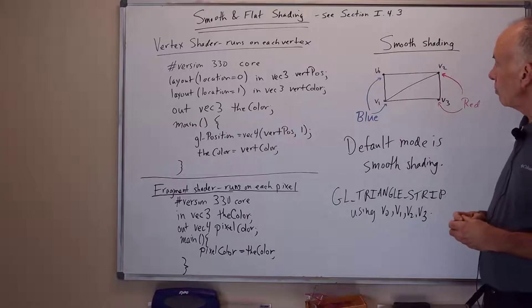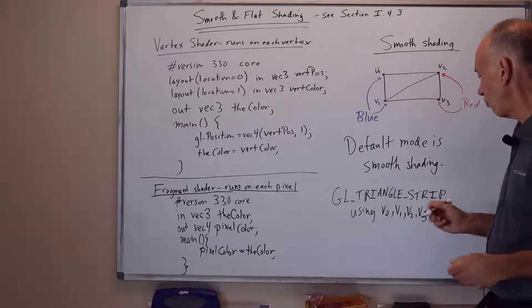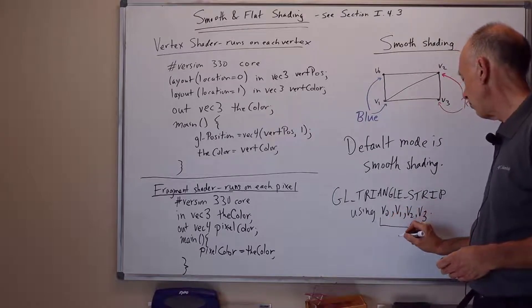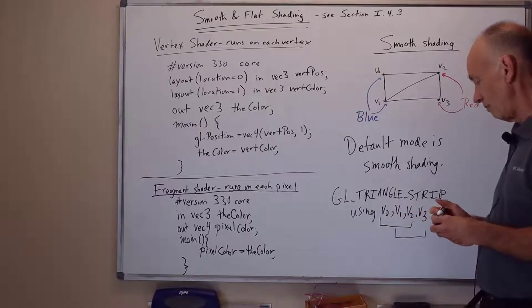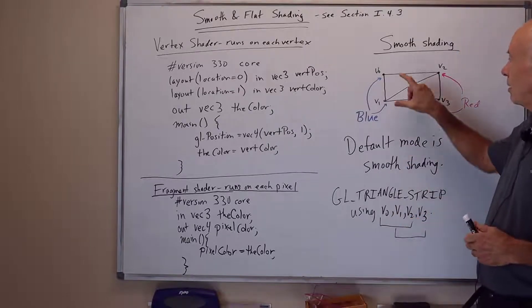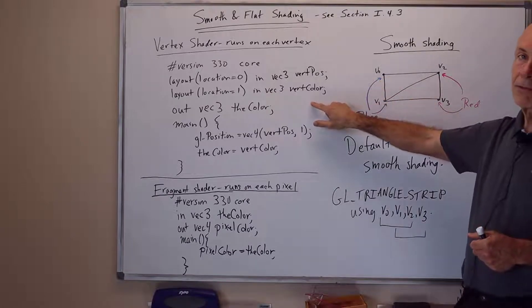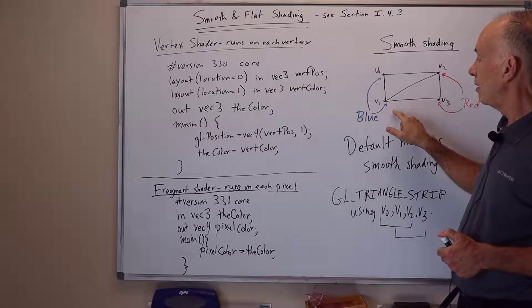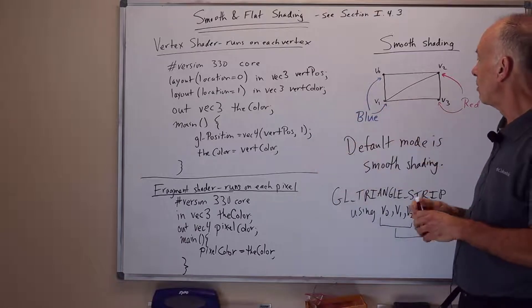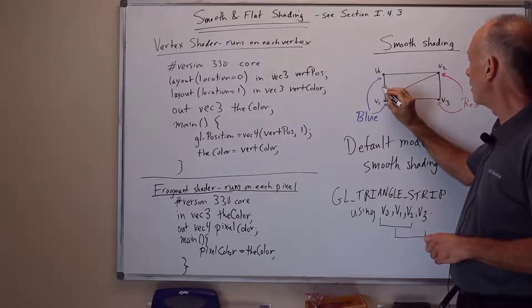What the smooth shading does is it takes the colors on the vertices as output by the vertex shader. This forms first the triangle V0, V1, V2, and then the triangle V1, V2, V3. When the fragment shader runs on some pixel, it may run on a pixel here, it could run on a pixel here, it could run on this corner pixel, and so forth.